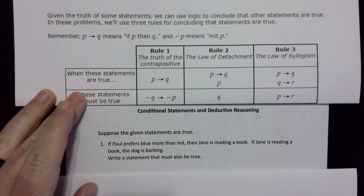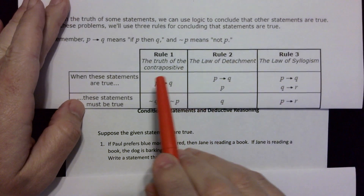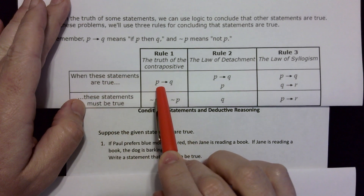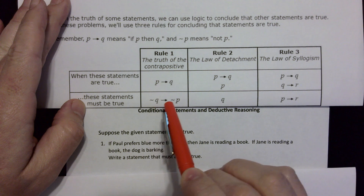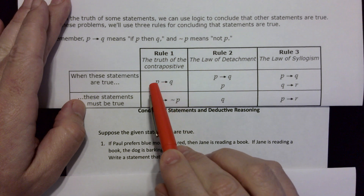The first rule is the truth of the contrapositive. It says if 'P then Q' is true, then 'not Q then not P' is also true. So you switch the order and change to 'not,' and it'll make it true as well.